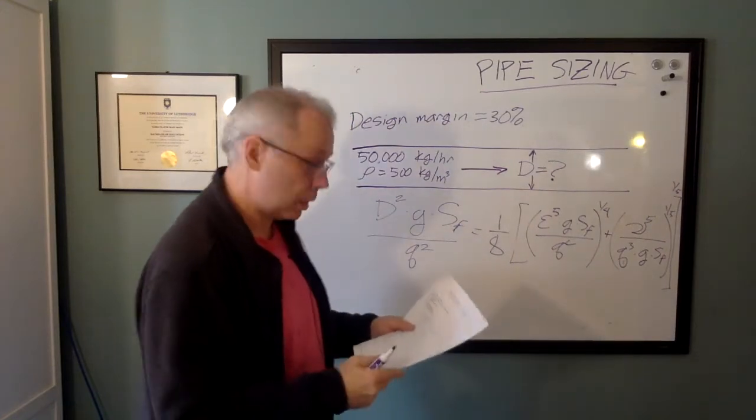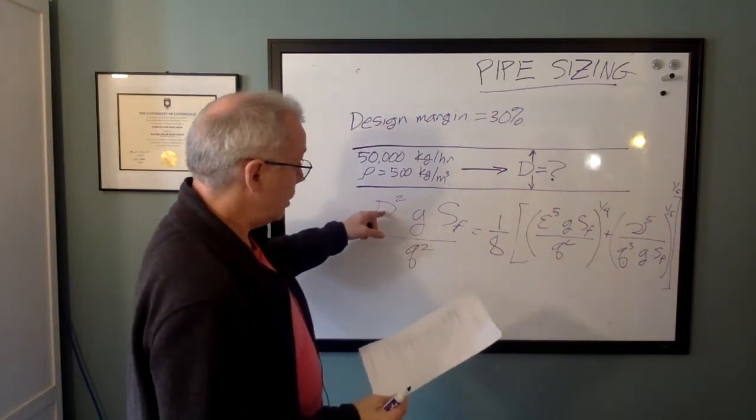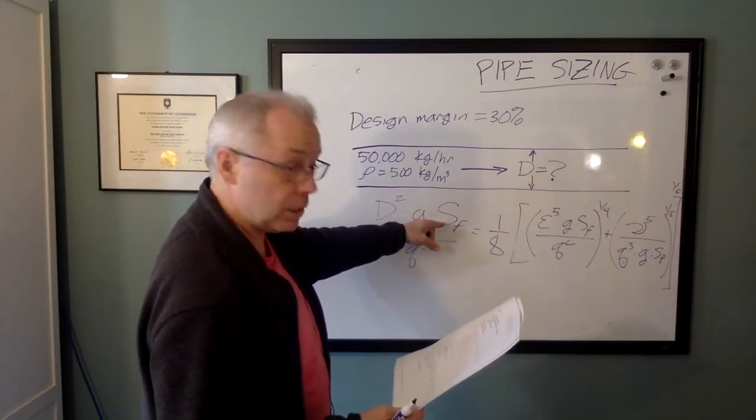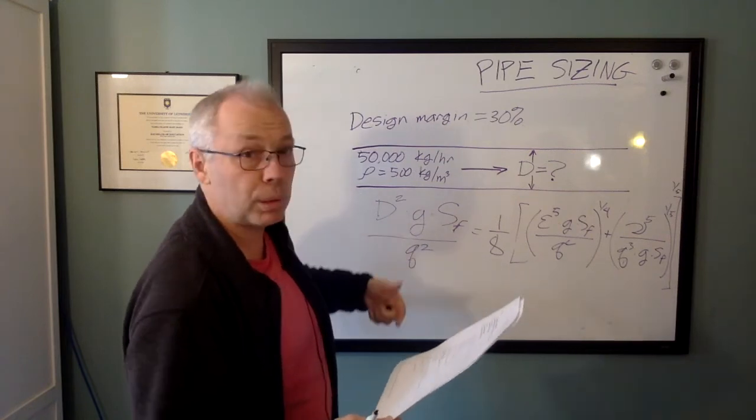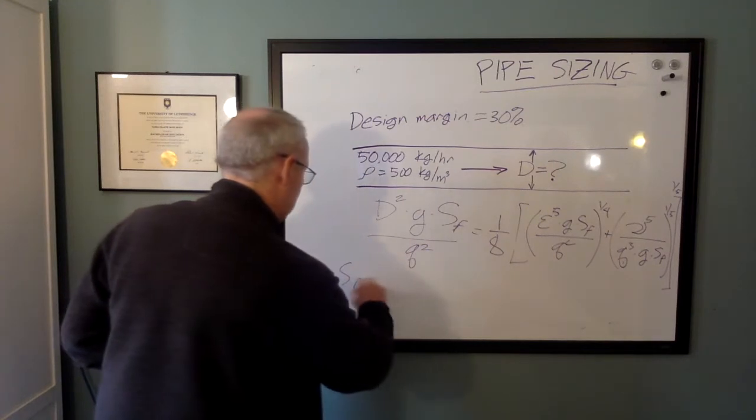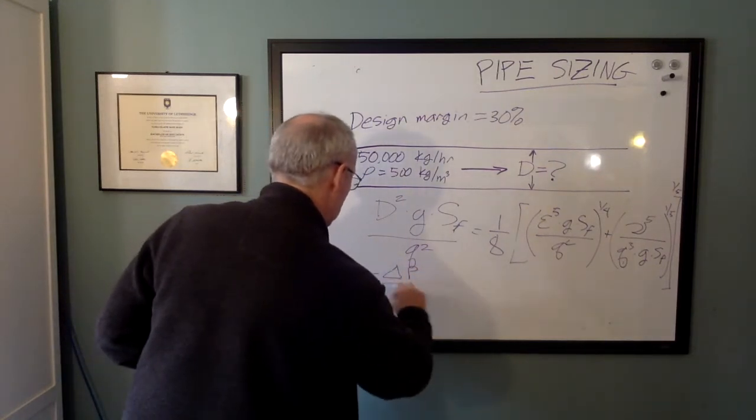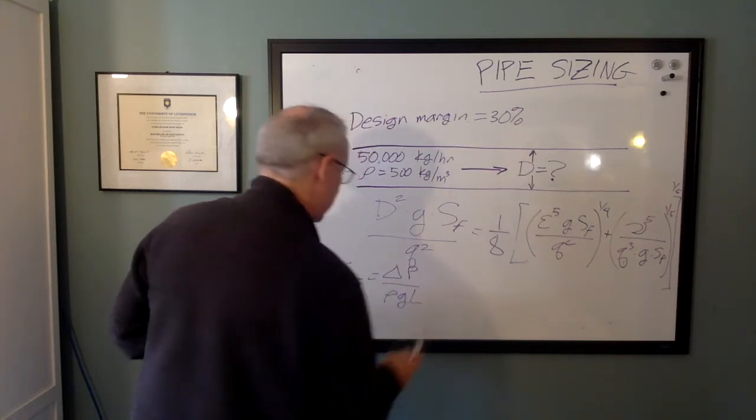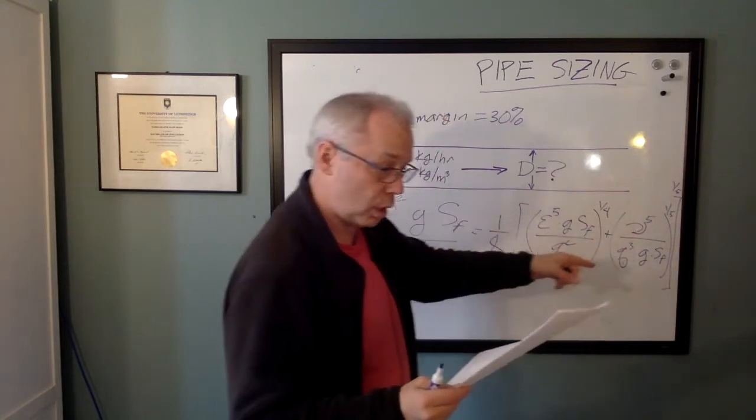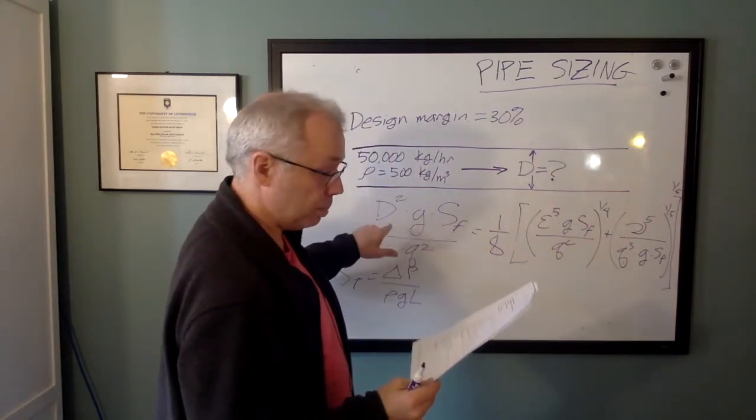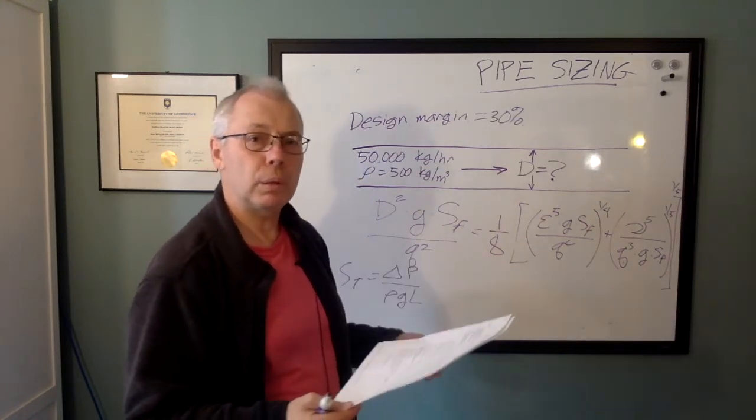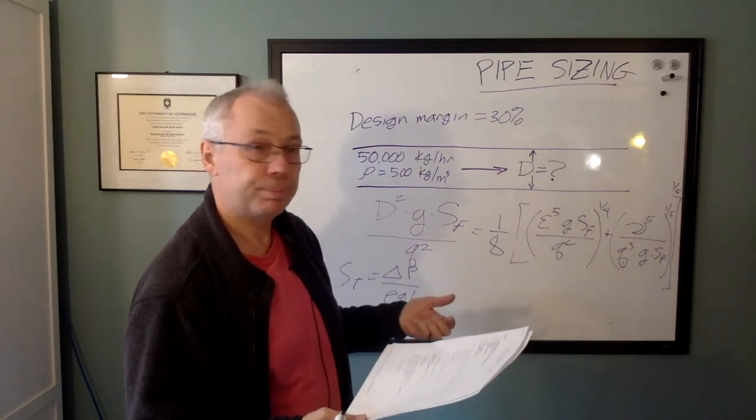And the variables are: D is the pipe diameter, G is gravity, Sf is the normalized pressure drop per unit length, so Sf is equal to delta P over rho G L, nu is the kinematic viscosity, D is the pipe diameter, and Q is the volumetric flow rate, and all of this works out in nice non-dimensional units.